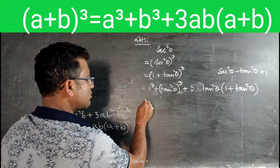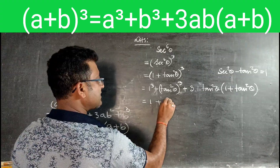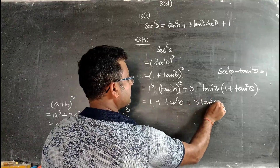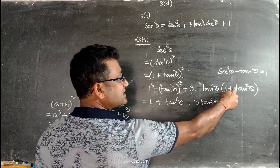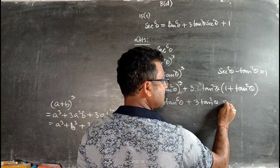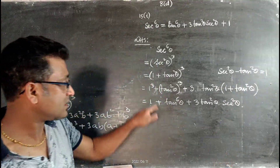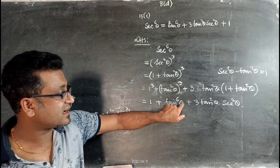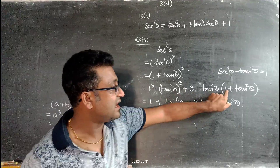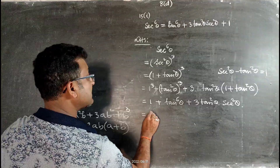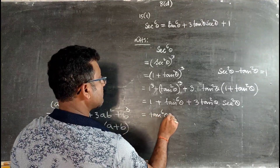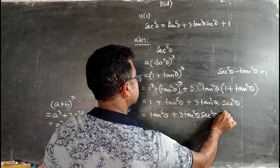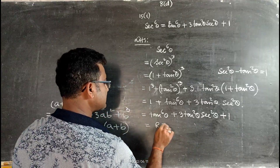Expanding (1 + tan²θ)³ using (a + b)³ = a³ + 3a²b + 3ab² + b³: 1³ = 1, plus tan⁶θ, plus 3·tan²θ·(1 + tan²θ). Since 1 + tan²θ = sec²θ, we get tan⁶θ + 3tan²θ·sec²θ + 1, which is the required right hand side.